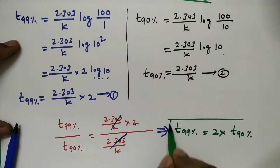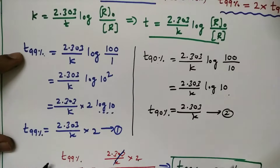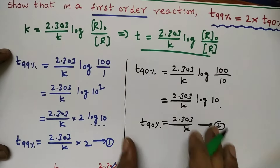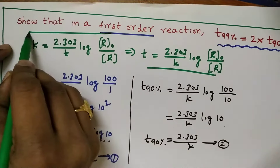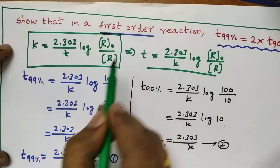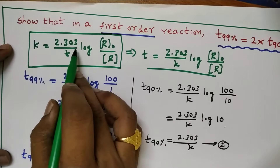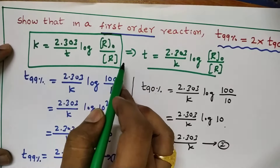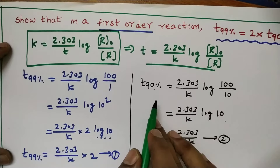To summarize this derivation, remember the formula k = 2.303/t × log(R₀/R). Using it for t99% and t90% and dividing gives t99% = 2 × t90% for a first order reaction.